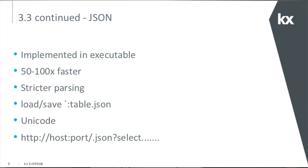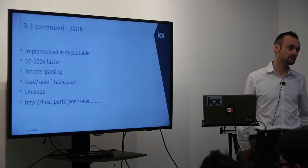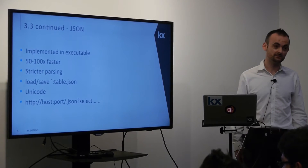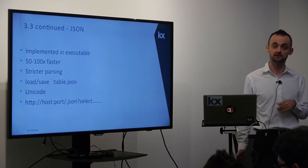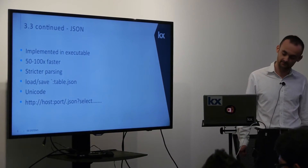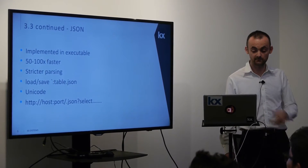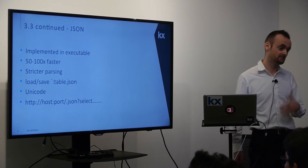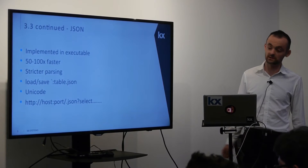One of the main things with 3.3 is JSON. We already had it in 3.2 via `j.k`, but now it's directly implemented inside the interpreter in C code, so it's about 50 to 100 times faster. It has much stricter parsing, and you can do things like `load table.json` or `save table.json`, just like you can with CSV files already. It also has Unicode support, and you can go via the browser with HTTP host and port and use `.json`. That's proven to be popular as well.